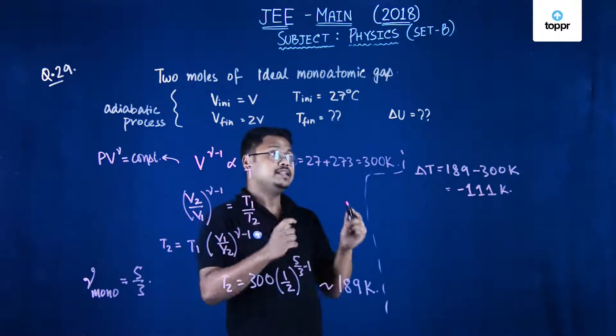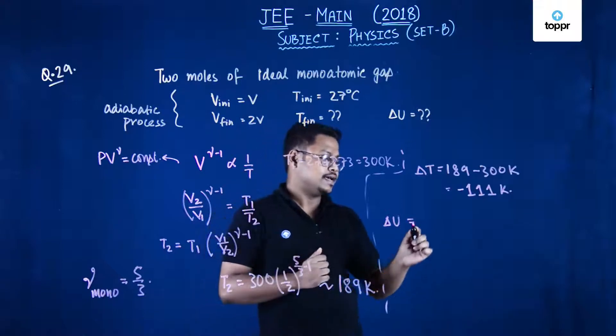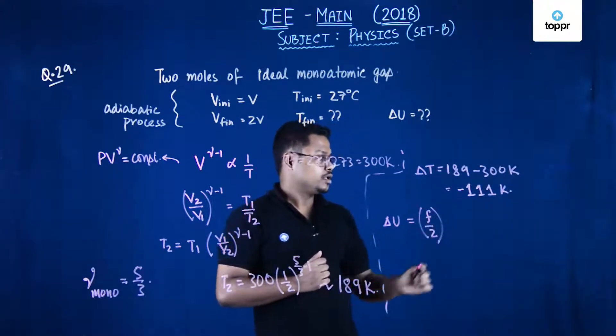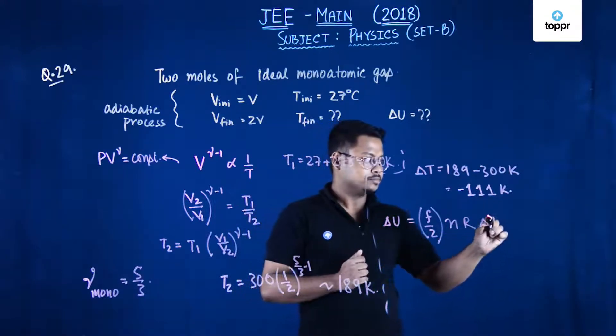Now we have to find the value of change in internal energy. So change in internal energy can be written as degree of freedom divided by 2 into N into R into delta T.